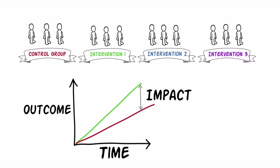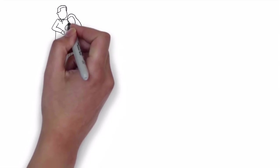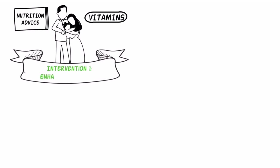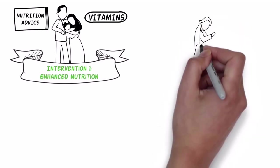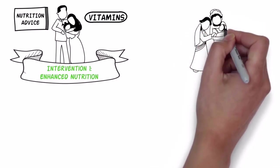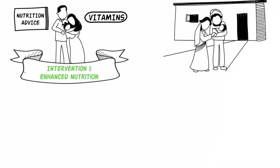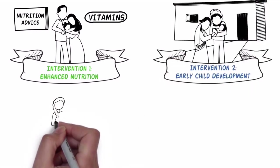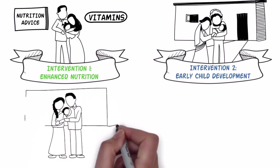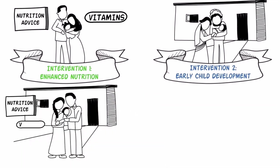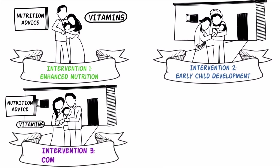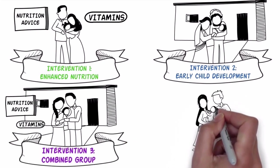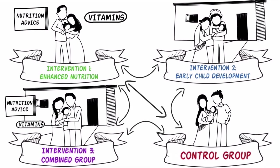In the Pakistan example, there were three intervention groups, each receiving a different set of treatments. The first intervention group received nutrition counselling, responsive feeding advice, and nutrition supplements from 6 to 24 months of age. The second received stimulation and care for development advice, including coached practice, integrated in routine monthly home visits and group meetings. The third intervention group received a combination of both the early childhood development and the enhanced nutrition interventions. They were all compared to each other, and also the control group, which had no new intervention.